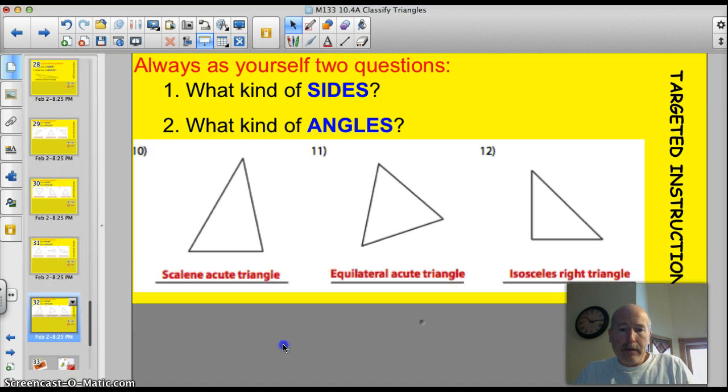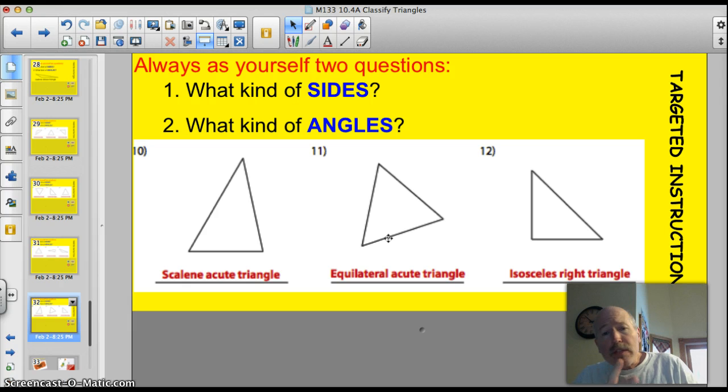Let's see how you did. This is scalene, but it's acute. All three sides are different, but all angles are acute. This is equilateral acute again. Equilateral are always going to be acute. They have to be, because if you've got two sides that are the same, you're going to have two angles that are the same. If you have three sides that are the same, you're going to have three angles that are the same. If no sides are the same, no angles are the same. Then the last one, an isosceles triangle. Two sides that are the same, and it is a right triangle.